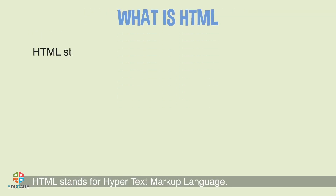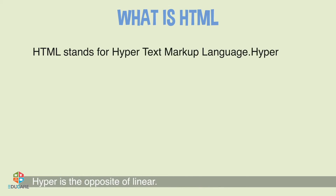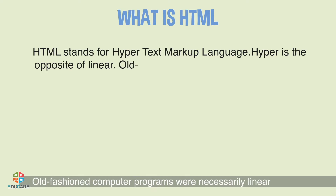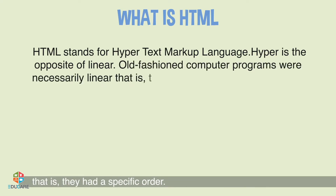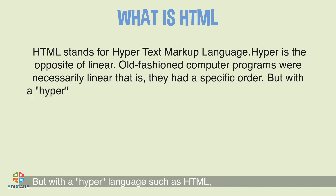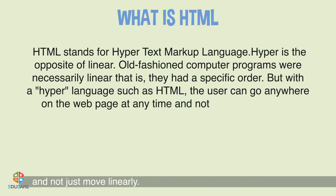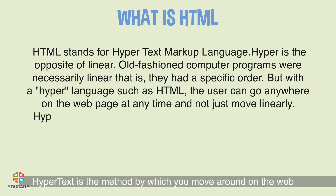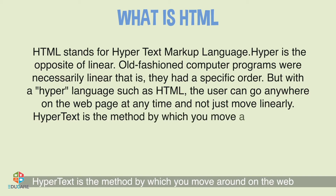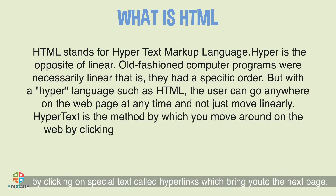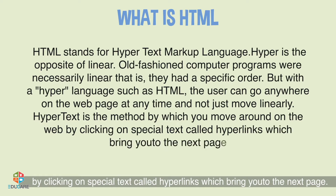What is HTML? HTML stands for Hyper Text Markup Language. Hyper is the opposite of linear. Old-fashioned computer programs were necessarily linear, i.e. they had a specific order. But with a hyper language such as HTML, the user can go anywhere on the web page at any time and not just move linearly. Hyper Text is the method by which you move around on the web by clicking on special text called hyperlinks, which bring you to the next page.